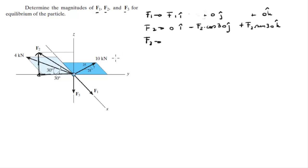Let's go to F3 now. F3 is going straight down in the z direction, so it's 0 i + 0 j - F3 k.